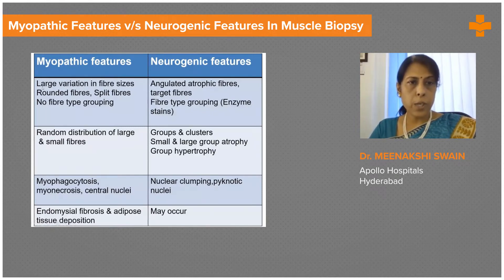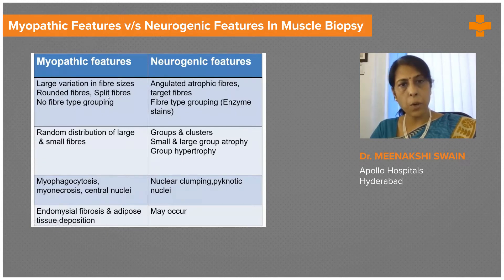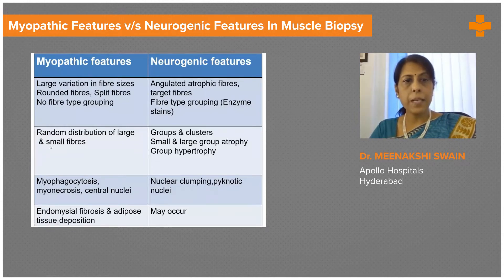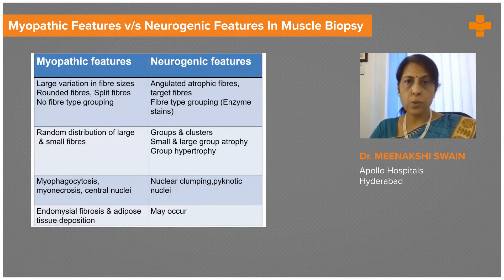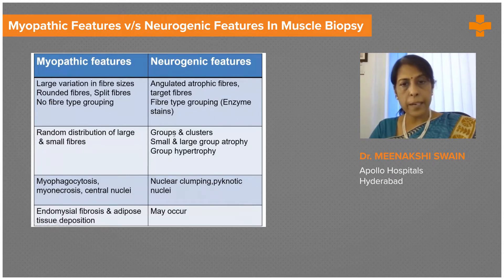Myopathic features are usually characterized by a large variation in fiber sizes — round fibers, large fibers, small fibers, and split fibers — and these fibers are randomly distributed throughout the fascicle. Whereas in neurogenic atrophy, there are usually angulated atrophic fibers, and these angulated fibers are arranged in groups, unlike the randomly distributed fibers seen in myopathic diseases.